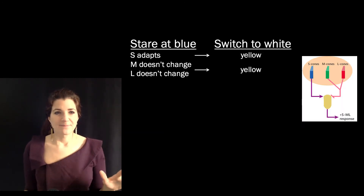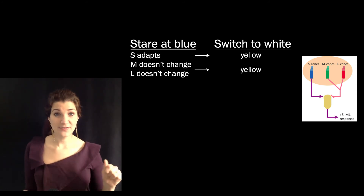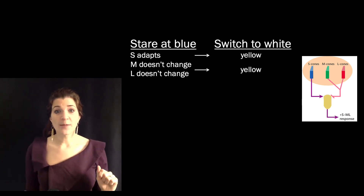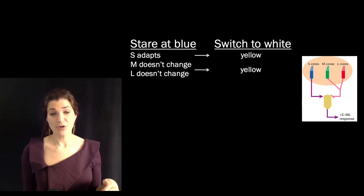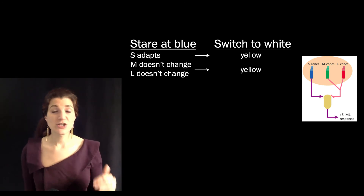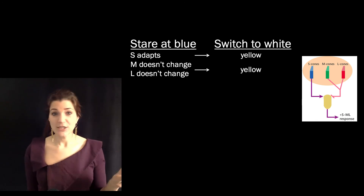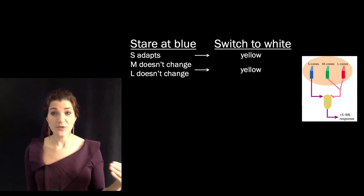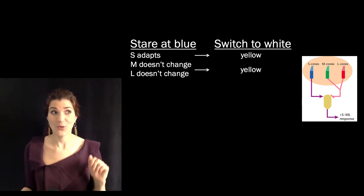Here's another way of thinking about this. If you stare at something blue, the pigment in your short cones is depleted, so activity in short cones is reduced. Given that blue and yellow are an opponent pair, when you switch to looking at something white, the short cones are not counteracting the medium and long cones as they typically would, so the resulting image appears yellower than it normally would. Furthermore, staring at something blue doesn't deplete photopigment in your medium and long cones, so when you switch to white light, they are still fully active — also contributing to the perception of yellow.